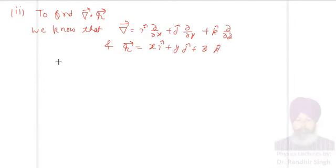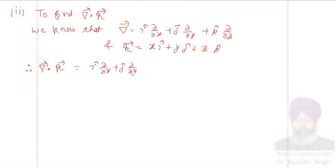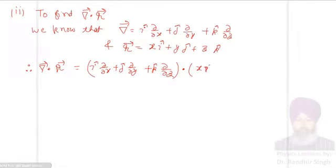Let us now take the dot product of both of these. Therefore del vector dot r vector will be equal to (i-cap ∂/∂x + j-cap ∂/∂y + k-cap ∂/∂z) dot (x·i-cap + y·j-cap + z·k-cap). If you expand it, it will be...